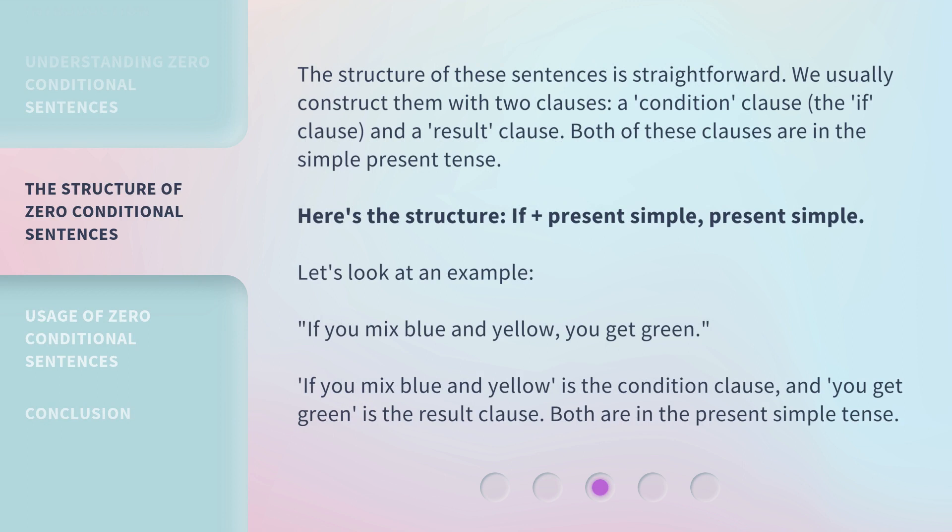The structure of these sentences is straightforward. We usually construct them with two clauses: a condition clause, the if clause, and a result clause. Both of these clauses are in the simple present tense. Here's the structure: if plus present simple, present simple. For example, if you mix blue and yellow, you get green. Here, 'if you mix blue and yellow' is the condition clause, and 'you get green' is the result clause.